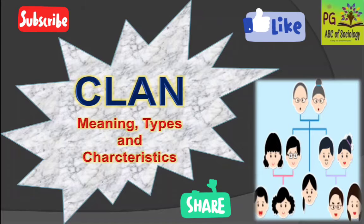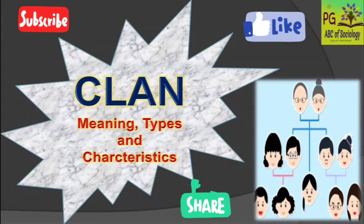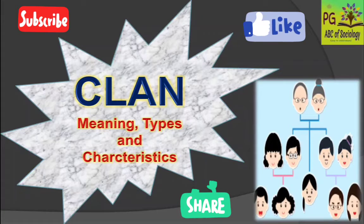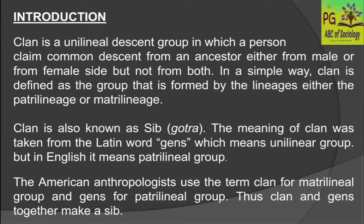Hello students, welcome back to ABC of Sociology class. Today's lecture is on clan — meaning, types, and characteristics. This is our fourth lecture on tribe and clan. We need to understand the meaning of clan; I have already explained tribe, but in the exam we can be asked about clan as a separate topic. Clan is a unilineal descent group in which a person claims common descent from an ancestor, either from the male or female side, but not from both.